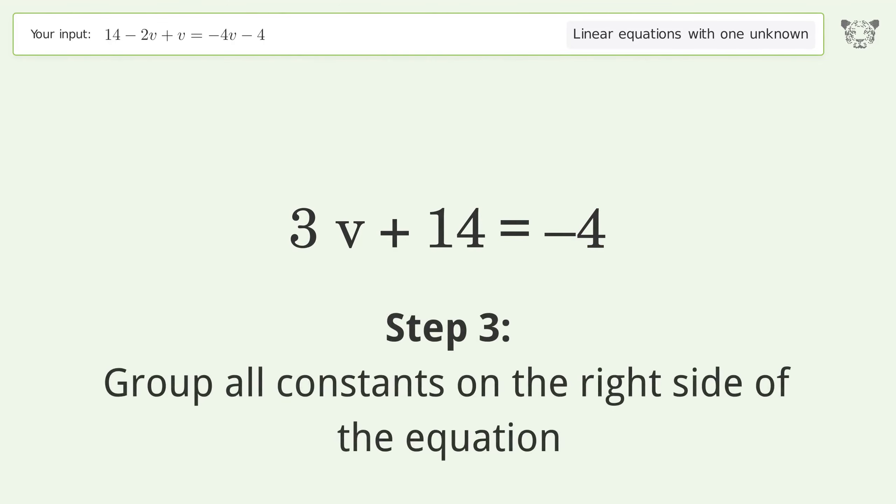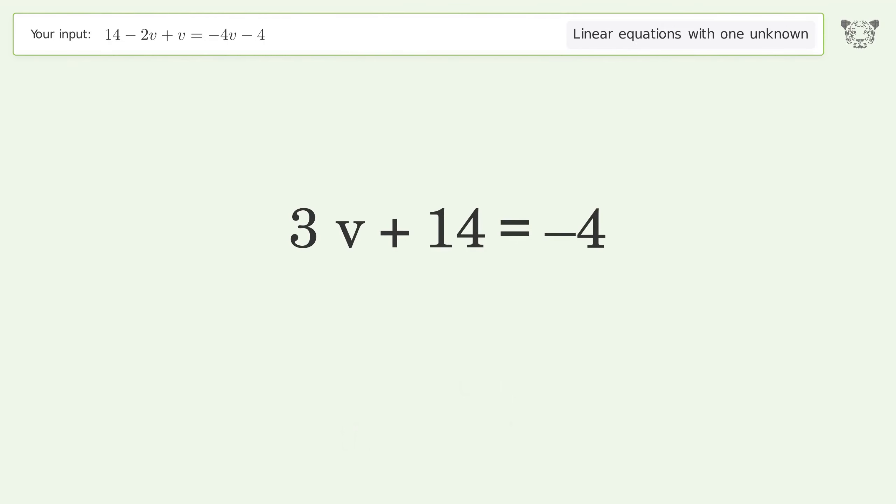Group all constants on the right side of the equation. Subtract 14 from both sides. Simplify the arithmetic.